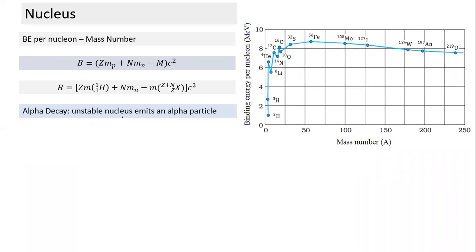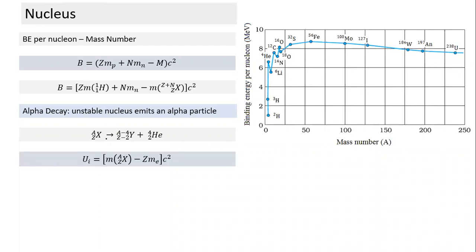What is alpha decay? An unstable nucleus emits an alpha particle. This is the nucleus — we add electrons only for convenience in mass calculation. If it decays, it emits an alpha particle. Using conservation of mass number and conservation of charge, in the case of alpha decay the atomic number decreases by 2 and mass number decreases by 4.